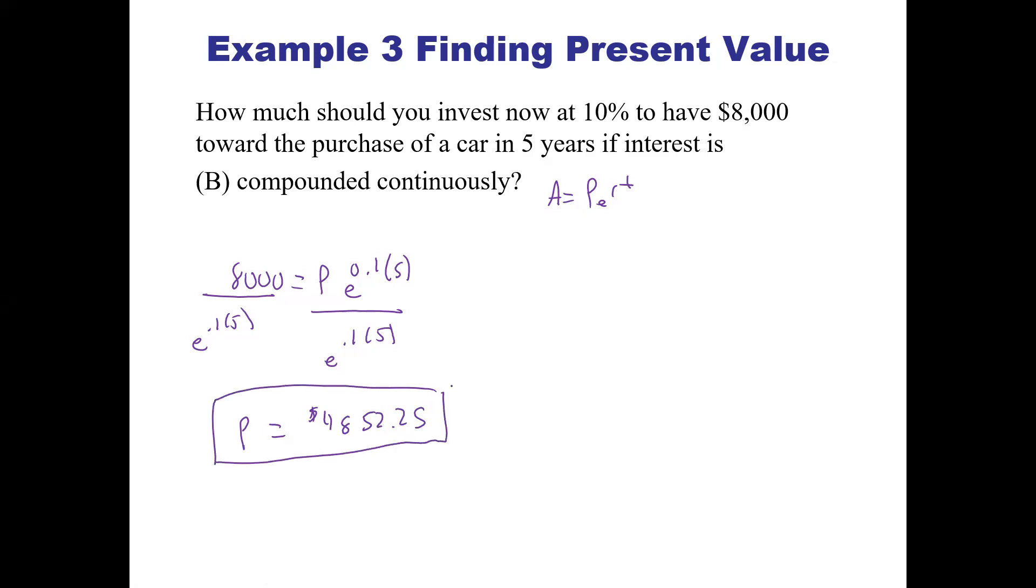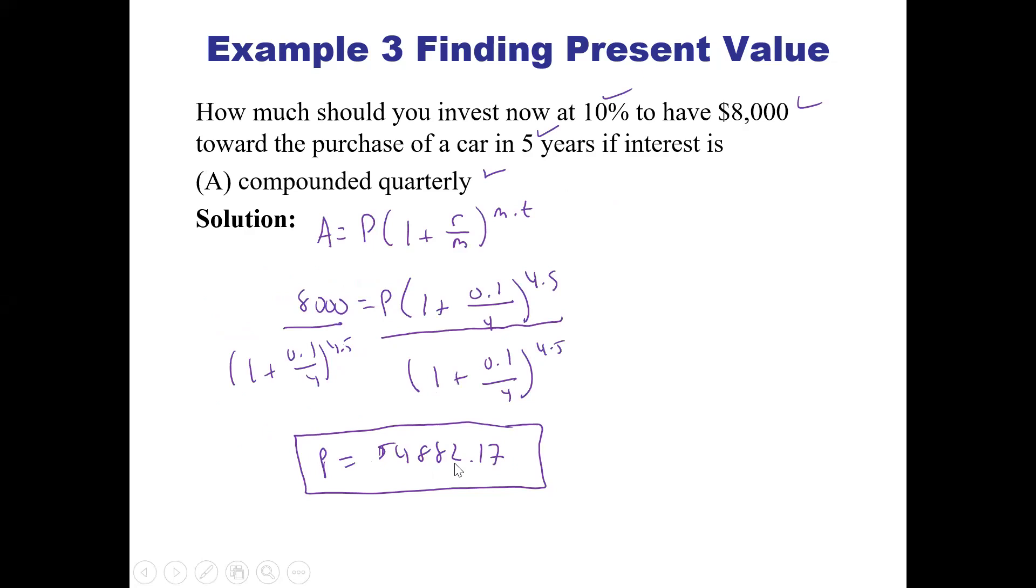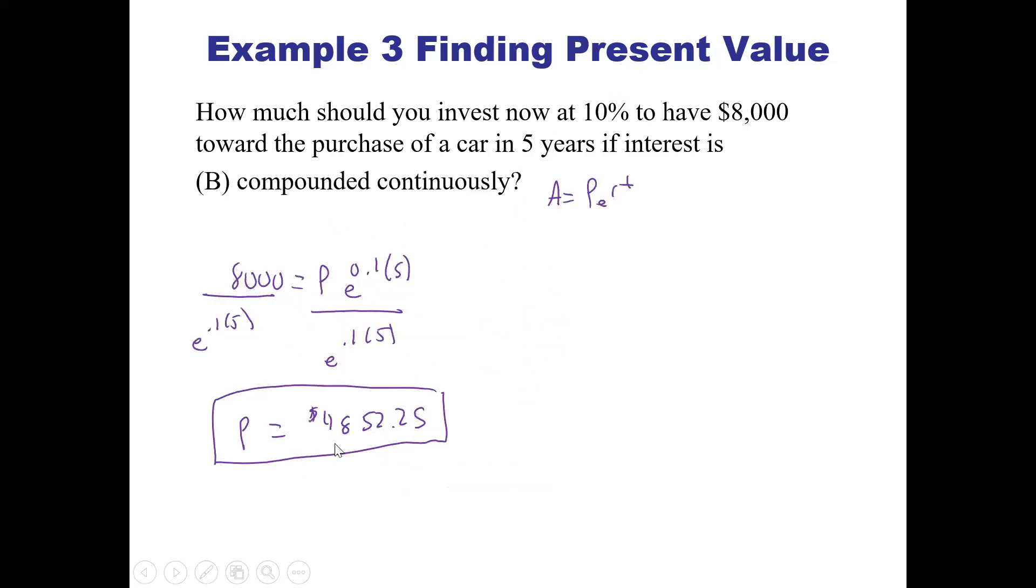That's how much we have to invest now to get $8,000 at 10% interest compounding continuously for 5 years. So $4,882.17 for quarterly and $4,852.25 for continuous compounding.